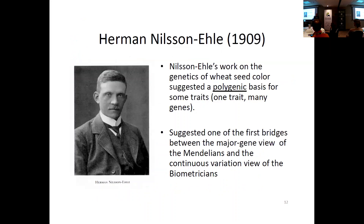That view was modified when Nilsson-Ehle looked at seed color in wheat. He elegantly showed that crossing a very pale wheat with a very red wheat yielded color forms consistent with multiple loci contributing to color. This was a major departure from Mendel's one gene, one trait idea — the first notion of having a Mendelian framework where multiple loci impact one trait. All the pieces were in place by around 1910.